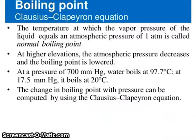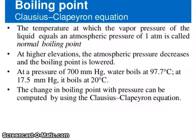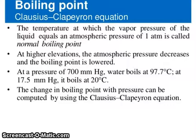Using the Clausius-Clapeyron equation, the temperature at which the vapor pressure of a liquid equals atmospheric pressure of 1 atm is called the normal boiling point. At higher elevation, the atmospheric pressure decreases and the boiling point is lower. For example, at a pressure of 700 mmHg, water boils at 97.7°C, and at 17.5 mmHg it boils at 20°C. The change in boiling point with pressure can be computed using the Clausius-Clapeyron equation.